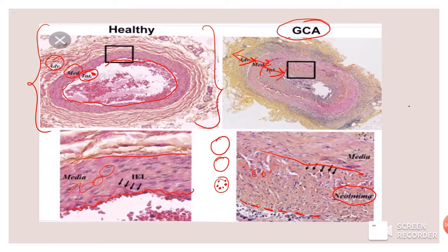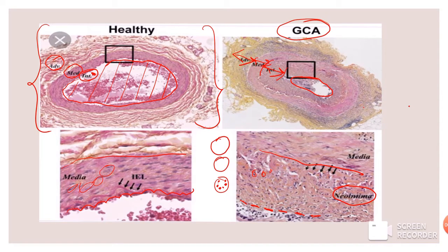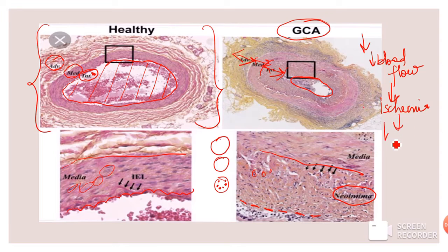Because of the thickening of all three layers of the artery wall in giant cell arteritis, the lumen decreases in size. With a decreased lumen, blood flow also decreases, resulting in ischemia — hypoperfusion. Whenever there is less blood supply to an organ, it is called ischemia, and when it occurs in the case of the optic nerve, it is called ischemic optic neuropathy.